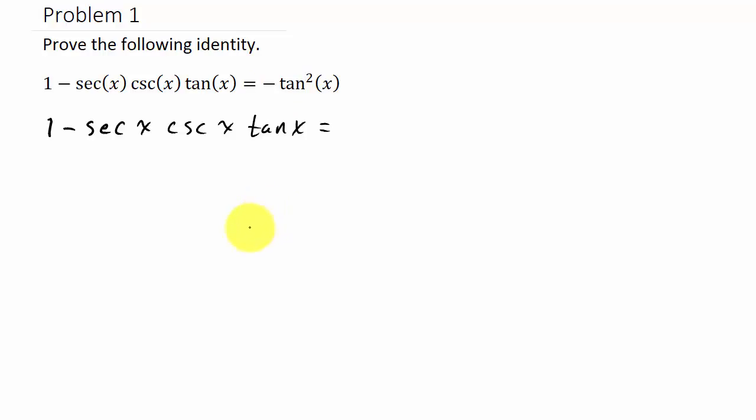A lot of times when verifying identities it's good to convert everything to sine and cosine. So I've got one minus, and then secant is one over cosine, cosecant is one over sine, and tangent is sine over cosine.